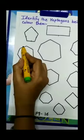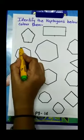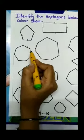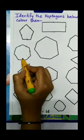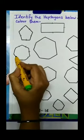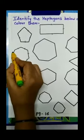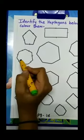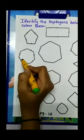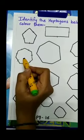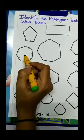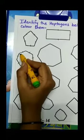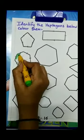Now we will count this one. 1, 2, 3, 4, 5, 6, 7. How many sides are there? Seven. It means which shape is this? Yes, it is a heptagon, so we will color this shape.